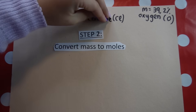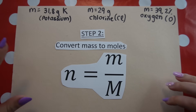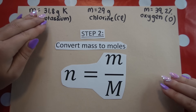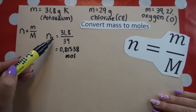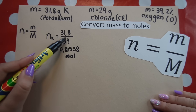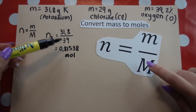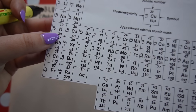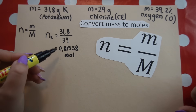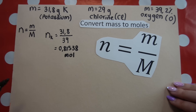Step two: convert these masses for each element into moles using the formula moles = mass ÷ molar mass. I've written the formula once and do separate calculations for each element. For potassium: 31.8 ÷ 39 = 0.81538 mol. Don't round off yet — store the full decimal in your calculator for use in the next step.